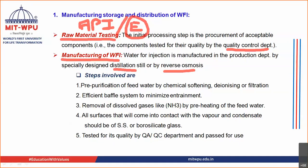Before you start with the distillation or reverse osmosis process, the water that has been received may be groundwater. So you carry out pre-purification of your feed water. Purification can be carried out by chemical softening method, deionizing method, or filtration method. Using these different methods, you carry out the pre-purification of your feed water.